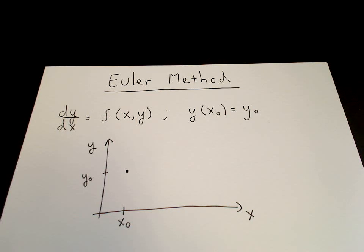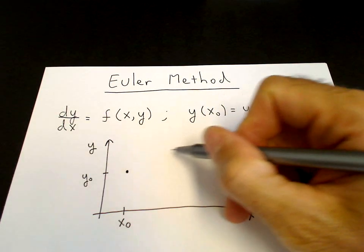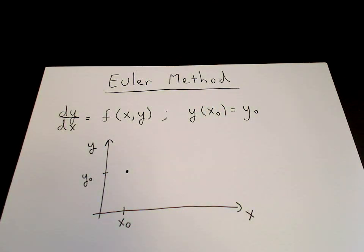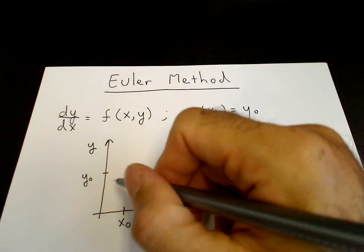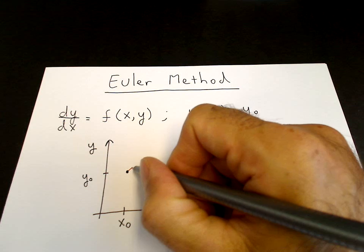What is dy/dx? dy/dx is the slope of the tangent line to the curve y equals y of x at the point x₀. So the solution curve could look something like this. But dy/dx at x₀ will give us the slope of the tangent line. So let me draw the tangent line.